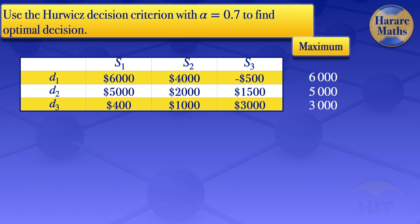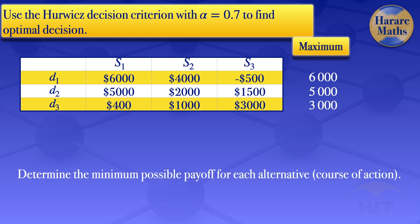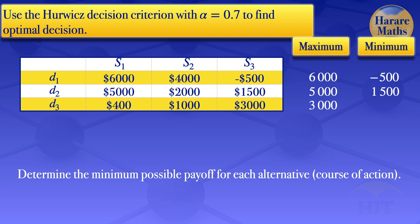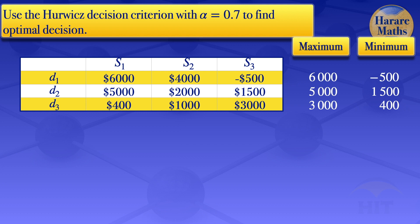We then go on and determine the minimum possible pay-off for each decision alternative. For decision 1, the minimum of 6,000, 4,000, and minus 500 is minus 500. For decision 2, the minimum of 5,000, 2,000, and 1,500 is 1,500. For decision 3, the minimum of 400, 1,000, and 3,000 is 400. So we have now found the maximums and the minimums.